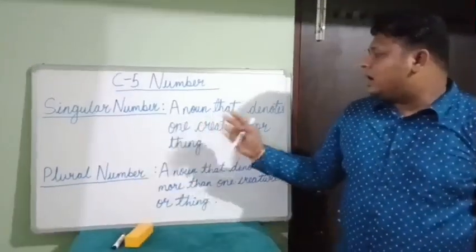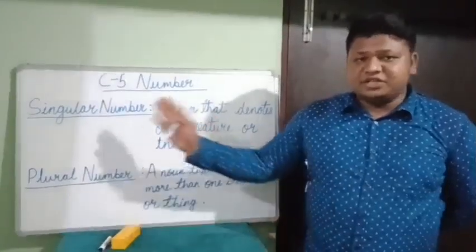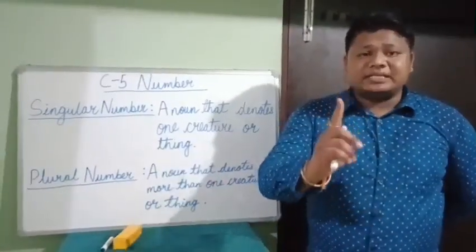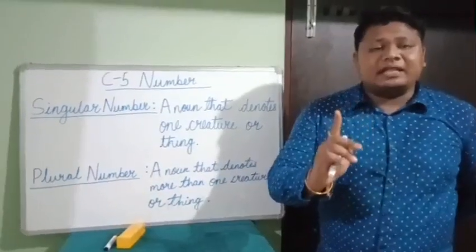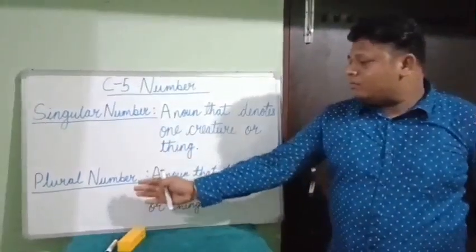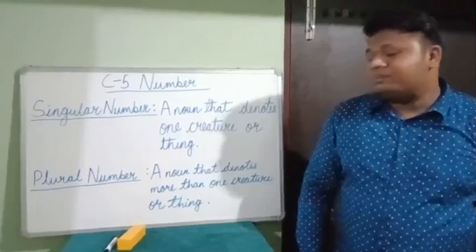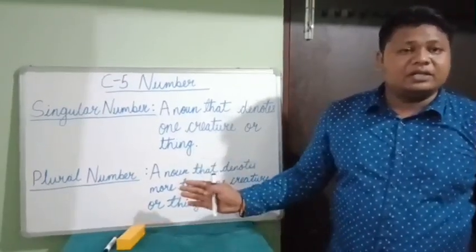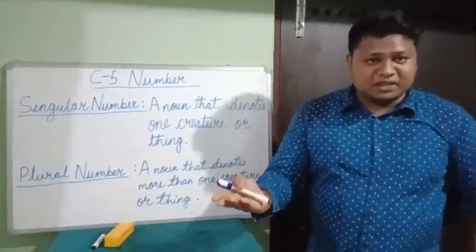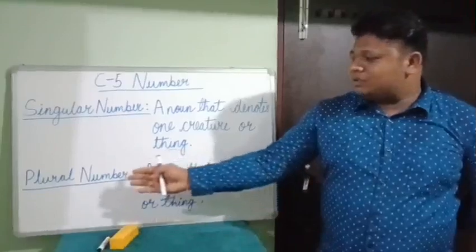Singular number: a noun that denotes one creature or thing is said to be in singular number. When we are talking about only a single person, animal, or thing, we call it singular number. Plural number: a noun that denotes more than one person or thing, we call it a plural number. When we are talking about more than one person, animal, or things, we call it plural number.